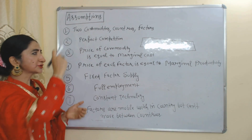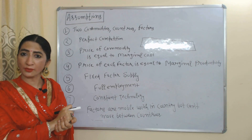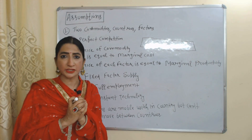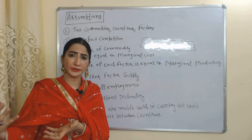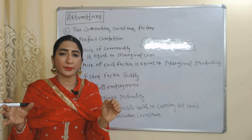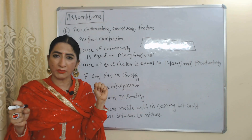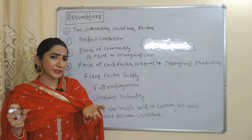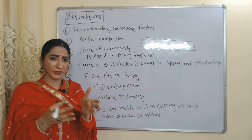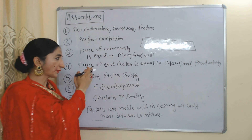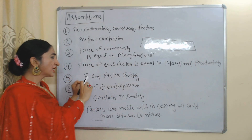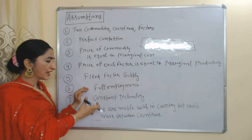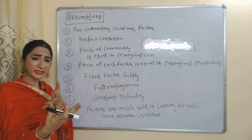Now we'll see the assumptions. There are two commodities, two countries, and two factors of production. Perfect competition in the economy. Price of commodity is equal to marginal cost — marginal cost means cost of producing additional units. Price of each factor is equal to marginal productivity — marginal productivity means changing productivity after employing one more factor of production. There is fixed factor supply, full employment, constant technology, and factors are mobile within a country but cannot move between countries.